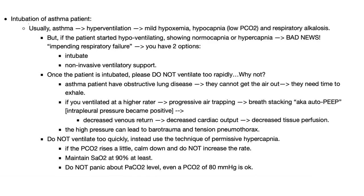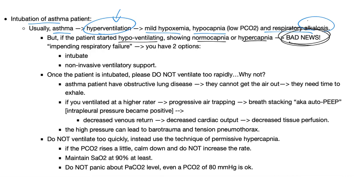Regarding intubation in asthma patients: early asthma causes hyperventilation leading to mild hypoxemia, hypocapnia, and respiratory alkalosis. Later, when severe, hypoventilation occurs. The patient may show normal or elevated CO2 — hypercapnia — which is bad news. Whenever the alkalosis starts normalizing and becoming acidosis, that's a warning sign. We will need to intubate, and we can first try non-invasive ventilatory support.